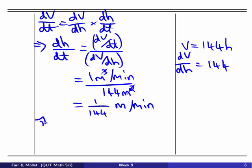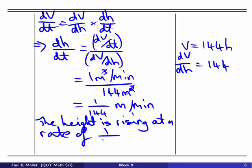So just to finish it off, write it out in the full sentence. The height is rising at a rate of 1 on 144 meters per minute. That's the answer to our problem. Okay, so that's basically it for our videos on derivatives. Make sure you can go and try out some of these problems on the worksheets. And that's it.